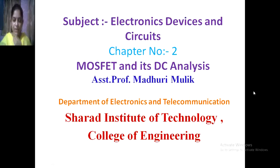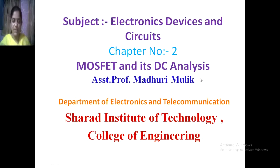In previous sessions we have covered chapter number 1, that is JFET — Junction Field Effect Transistor. Now, the second chapter deals with MOSFET and its DC Analysis. These Electronics, Devices and Circuits cover Transistor Theory, as well as Oscillators, Amplifiers, Regulators, and IC Ripple Files. From this subject, chapter number 2 is MOSFET and its DC Analysis.